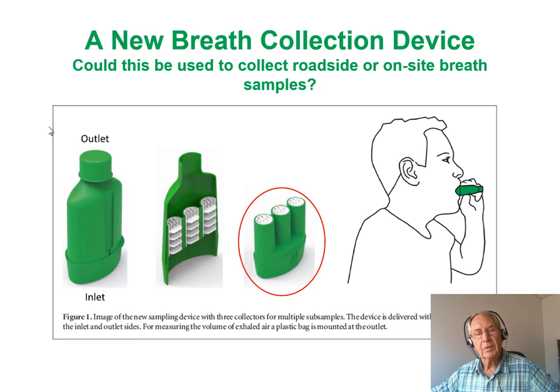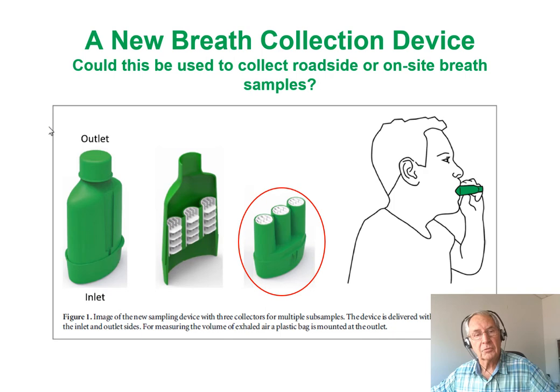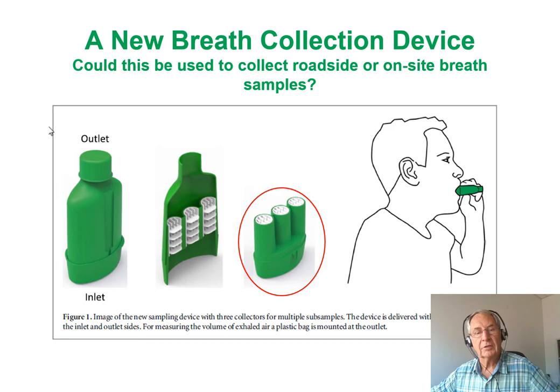This new device is shown here. It's a simple, small device with an outlet and an inlet. The person providing the sample removes the inlet and outlet covers, places the larger opening to their mouth, and exhales slowly about 10 times into the device. Inside the device, cut away here, you can see there are three collectors in a tortuous pathway for the breath to go through, with lots of surface area where particles are collected. Having three collectors means one sample is split into three: an A sample, a B sample, and a C sample.